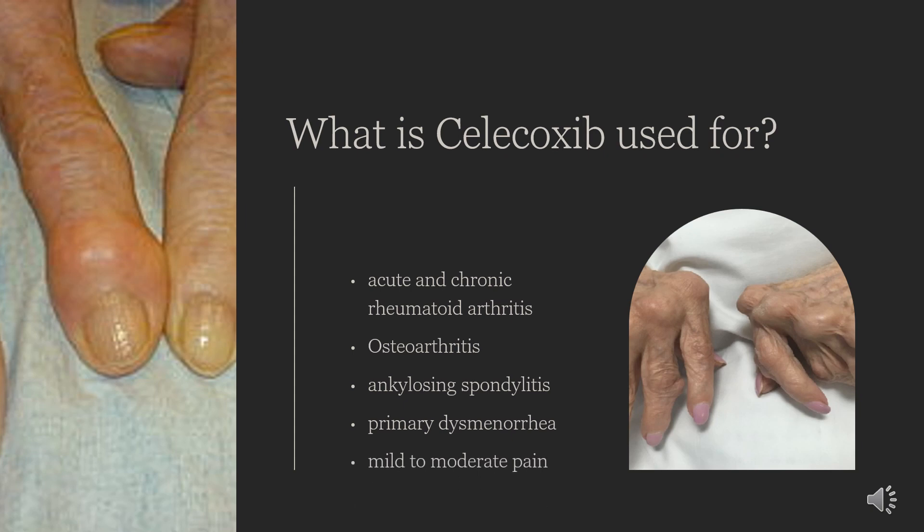Celecoxib is indicated for symptomatic treatment of adult osteoarthritis (OA) and adult rheumatoid arthritis (RA). Celecoxib is not a substitute for aspirin for cardiovascular event prophylaxis. It may also be used to treat acute pain from various sources, juvenile rheumatoid arthritis in children over 2, ankylosing spondylitis, and primary dysmenorrhea.